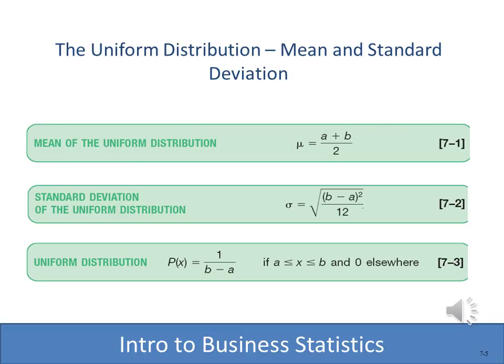When working with uniform distributions, we also work with the mean and the standard deviation. These formulas are very simple. The mean formula is simply A plus B divided by 2, where 2 is a constant. The standard deviation is the square root of B minus A squared divided by 12, where 12 is a constant used with the uniform distribution.